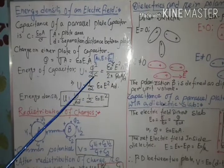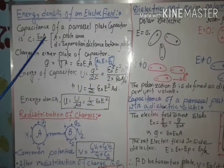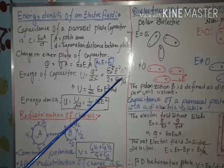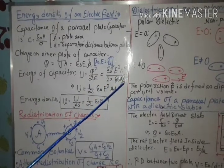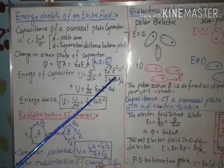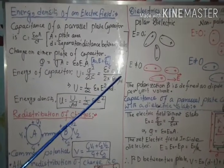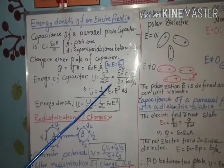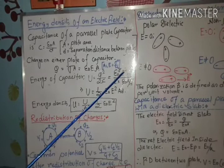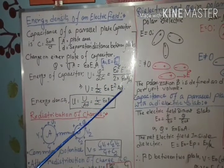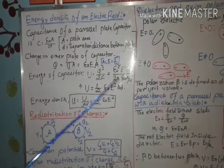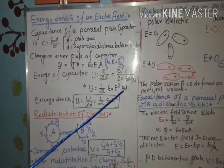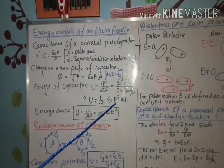Divided by 2 into C, where C is epsilon naught A by D, so in place of C I write epsilon naught A by D. After cancelling epsilon naught and A, we get the equation as U equal half epsilon naught E squared A into D. This is the expression for energy of a capacitor in terms of the electric field.